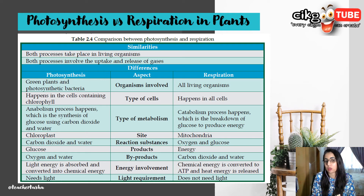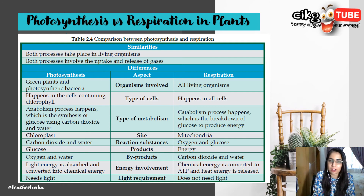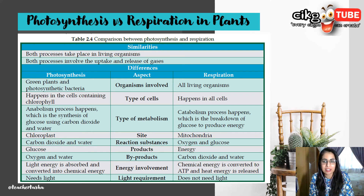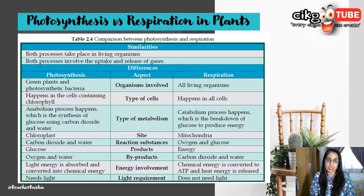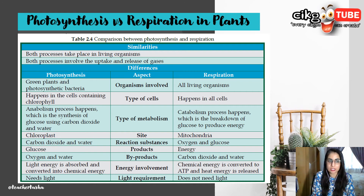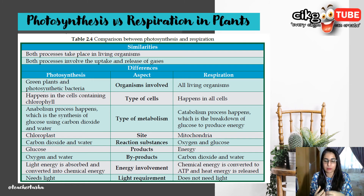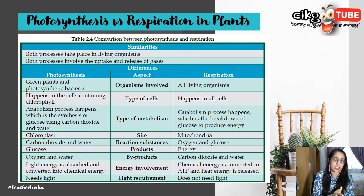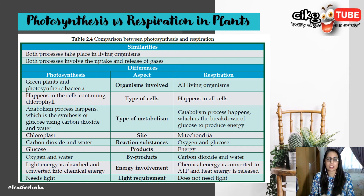The site for photosynthesis is the chloroplast, whereas the site for respiration is the mitochondria. The main product of photosynthesis is glucose; for respiration it is energy. Byproducts of photosynthesis are oxygen and water; respiration produces carbon dioxide and water. For energy involvement: in photosynthesis, light energy from sunlight is absorbed and converted into chemical energy; in respiration, chemical energy from glucose is converted to ATP and heat energy is released. Photosynthesis always requires light; respiration does not require light.